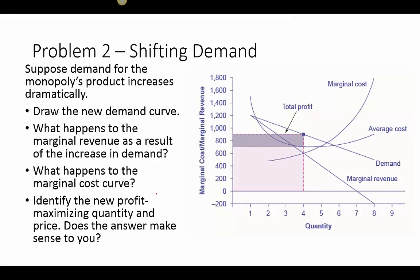Now we add a twist: suppose the demand for the monopoly's product increases dramatically. We draw in the new demand curve — the old demand was here and the new demand shifts out. The question is what happens to marginal revenue as a result. The old marginal revenue curve was here and it will also shift outward.